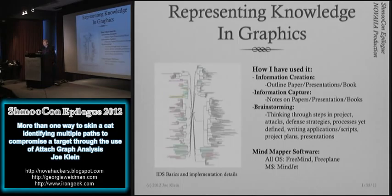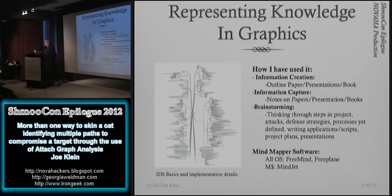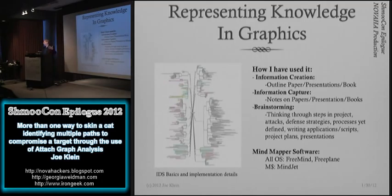I also use this a lot in brainstorming processes. I'll use it for writing scripts — for example, how to do tunnel enumeration with IPv6. I spent probably a month off and on just doing the pseudo code in this before I actually implemented code. A couple of open source tools worth mentioning: FreeMind and FreePlane are good products, and also MindJet. One cool thing about MindJet is if you put together a framework like this, you can convert it and put project dates against it and it will generate a Microsoft Project file.